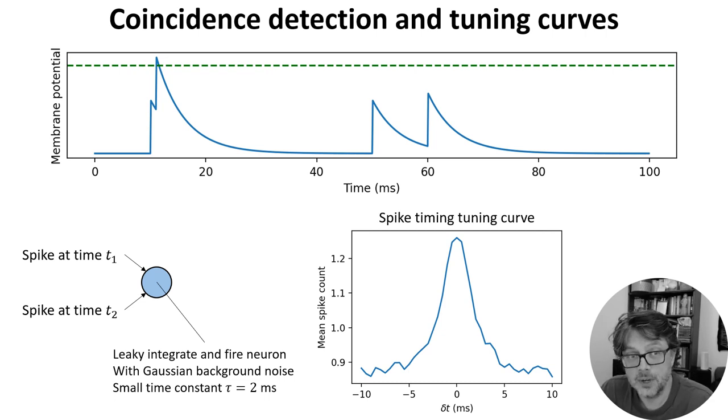This is one example of what's called a tuning curve in neuroscience. It shows the response of a neuron averaged over several repetitions to a stimulus defined by one or more variables. In this case, the variable is the arrival time difference between the two spikes, but it could be anything like the contrast of a visual image, the amplitude or pitch of a sound and so on. And it can also be 2D, in which case you'd plot it as an image. We'll come back to tuning curves a bit later.